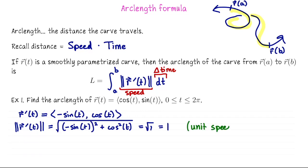This is a unit speed parametrization. So according to this formula, the arc length should be the integral from 0 to 2 pi 1 dt. So the antiderivative is t going from 0 to 2 pi. And as expected, we get an arc length of 2 pi.